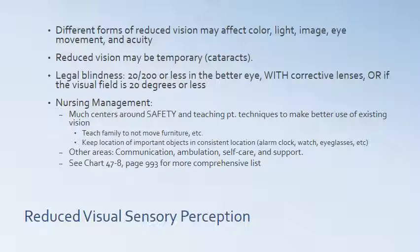Nursing management for patients with reduced visual sensory perception centers on safety and teaching techniques to make better use of existing vision. Teach the family not to move the furniture. Keep locations of important objects consistent — alarm clocks, watches, eyeglasses. Other areas of concern include communication, ambulation, self-care, and support. Refer to chart 47-8 on page 993 in Iggy for a comprehensive list of nursing management strategies.